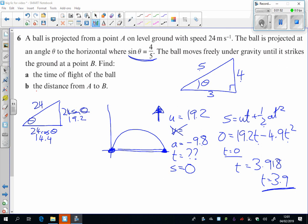For part b, we're just asked, well what's the distance you're travelling there? So now we're going to go in the horizontal direction. We know horizontally we were starting at 14.4 metres per second. We know we're going for 3.9 seconds,